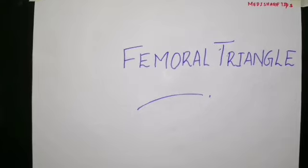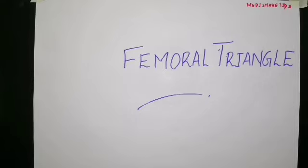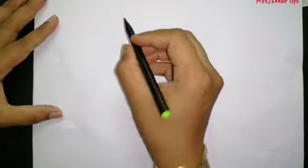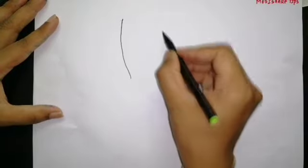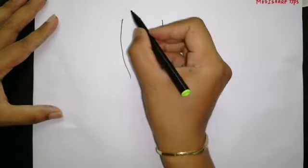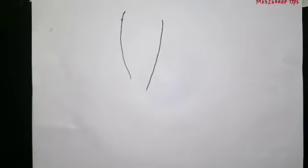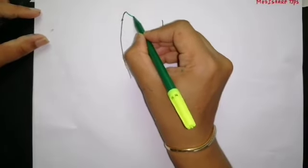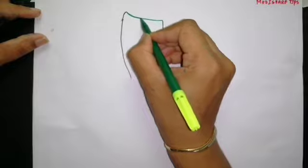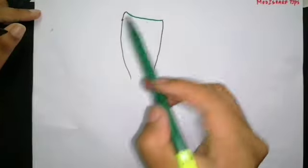In this video we are going to discuss the femoral triangle. The femoral triangle is a triangular-shaped depression which is formed in the upper one-third of the thigh, immediately below the inguinal ligament. The base of the triangle is formed by the inguinal ligament.